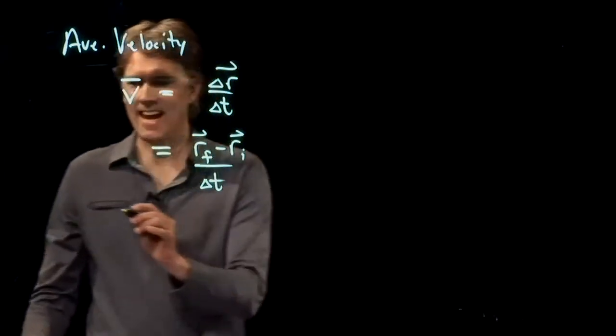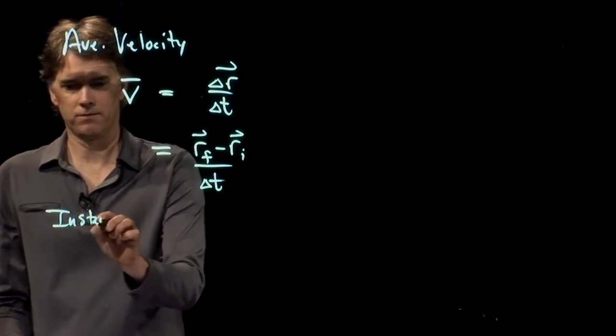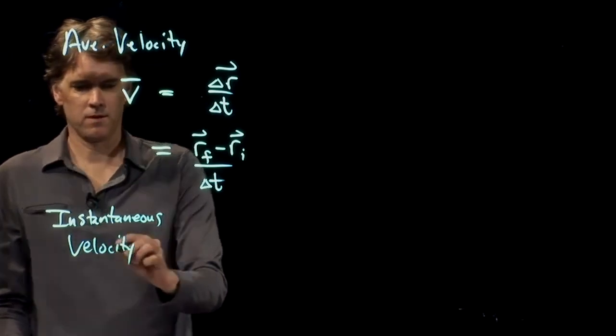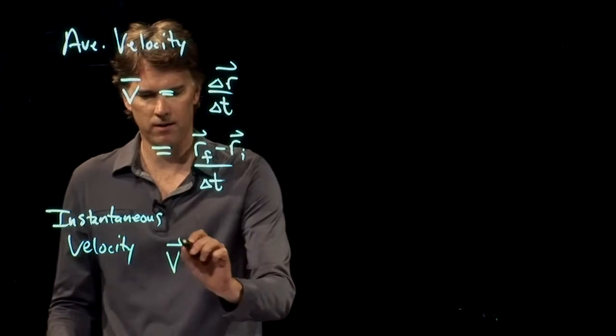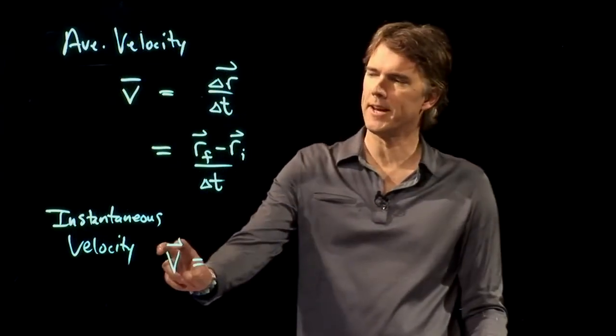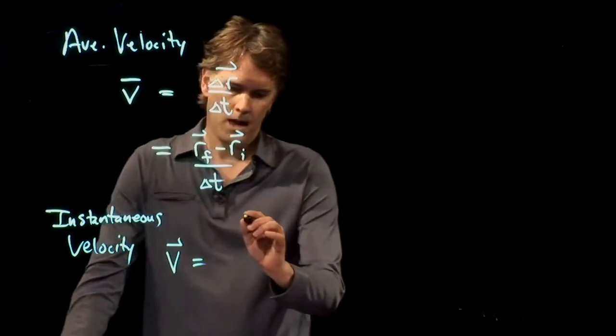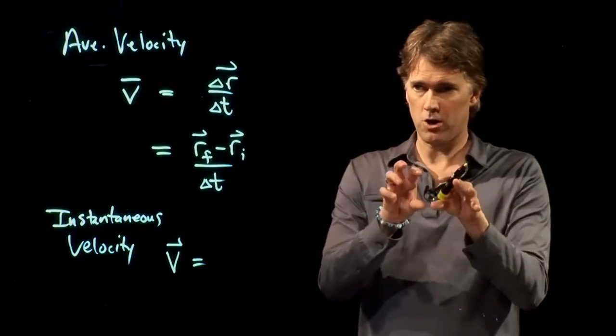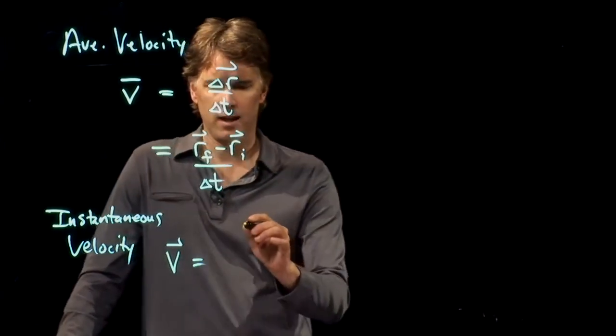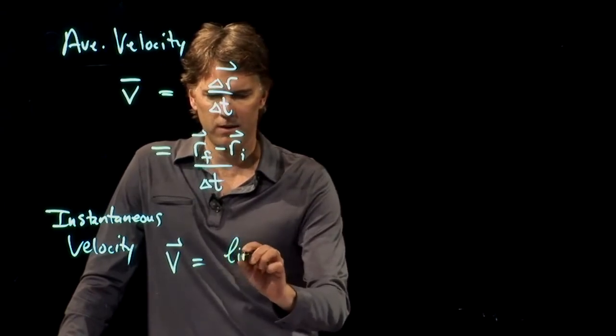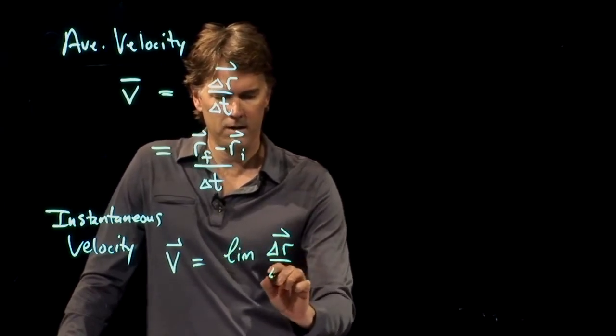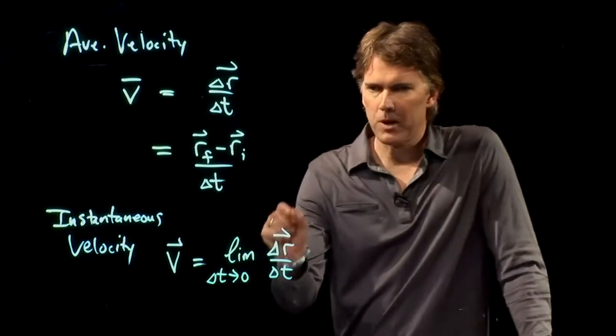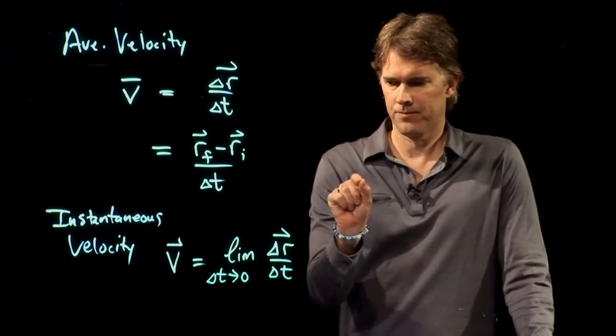All right, what about instantaneous velocity? Well, that one we can write like this. Also, a vector is just not an average, so we don't put the bar on it. And instantaneous velocity is when you're driving along and you look at your speedometer in your car, that is your instantaneous velocity. And so, it is the limit of delta R over delta T as delta T goes to zero. Namely, I'm going to take this measurement over a very short time.